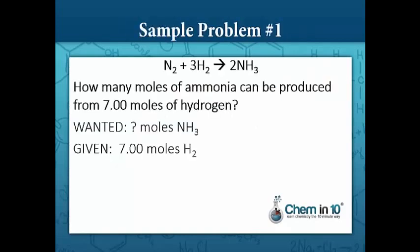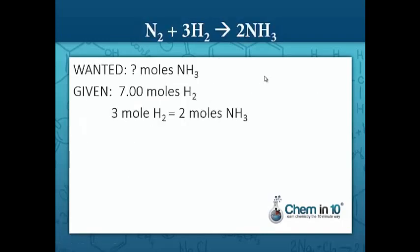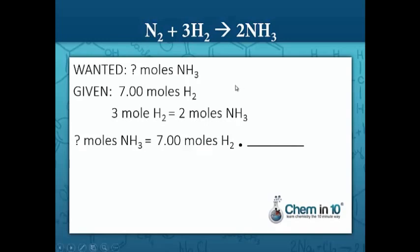We're going to need the mole ratio to solve it. We want moles of ammonia per moles of hydrogen. Our molar ratio tells us that three moles of hydrogen make two moles of ammonia — that's our conversion factor. We set up our problem: question mark moles of ammonia equals seven moles of hydrogen, and we set up our conversion factor so that moles of hydrogen cancel out.